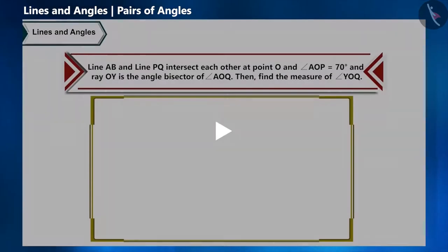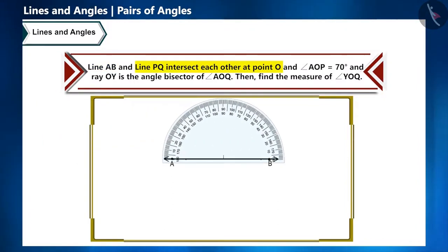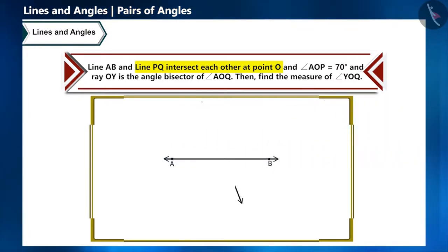First of all, let's draw a line AB. You can draw it in any way, but at the time of drawing the line PQ, we need to keep in mind the angle.